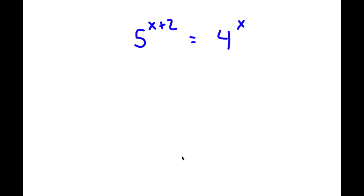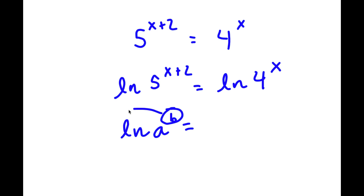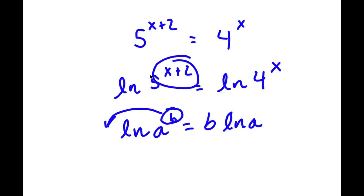In this problem, I have 5 to the power of x plus 2 is equal to 4 to the power of x. To solve this, I'm going to first take the natural log on both sides. So I have ln of 5 to the power of x plus 2 is equal to ln of 4 to the power of x. Now, if I have something in the form ln a to the power of b, I can move the exponent b to the front, giving b times ln a. So for ln 5 to the power of x plus 2, I move x plus 2 to the front, and for ln 4 to the power of x, I move x to the front.